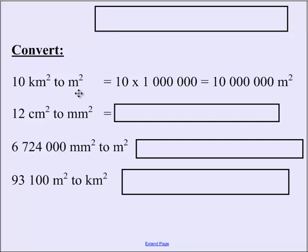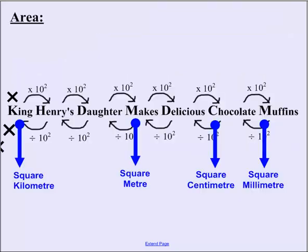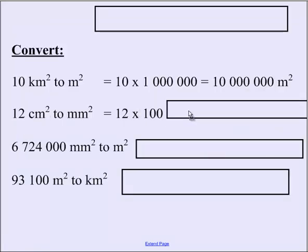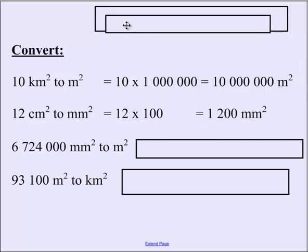So converting 12 centimetres squared to millimetres squared. Centimetres here to millimetres, we're only making the one jump, which means we only need to move the decimal place two places, or times by 100. So 12 times 100 gives us 1200 millimetres squared.